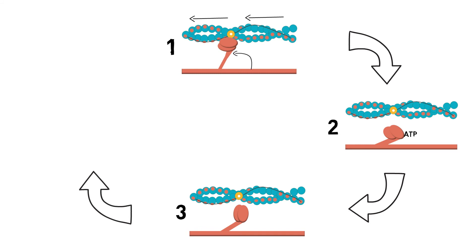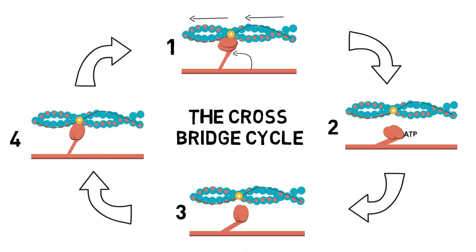The continuous attachment and detachment of the crossbridge creates a ratchet mechanism that contracts and relaxes skeletal muscle. Although this happens at a microscopic level, it will be taking place throughout the whole muscle.